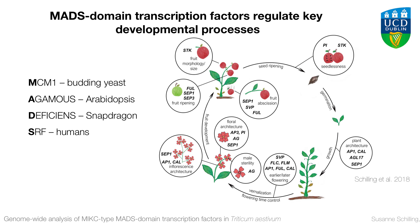What we did in this illustration is map examples of changes to the life cycle of a generic plant. For example, seedlessness in grapes is conferred by a SEEDSTICK-like MADS-box gene. Vernalization and flowering time control in grasses — that is very well studied — are also conferred by MADS-box genes. And fruit obsession in tomato is also conferred by changes in a MADS-box gene.